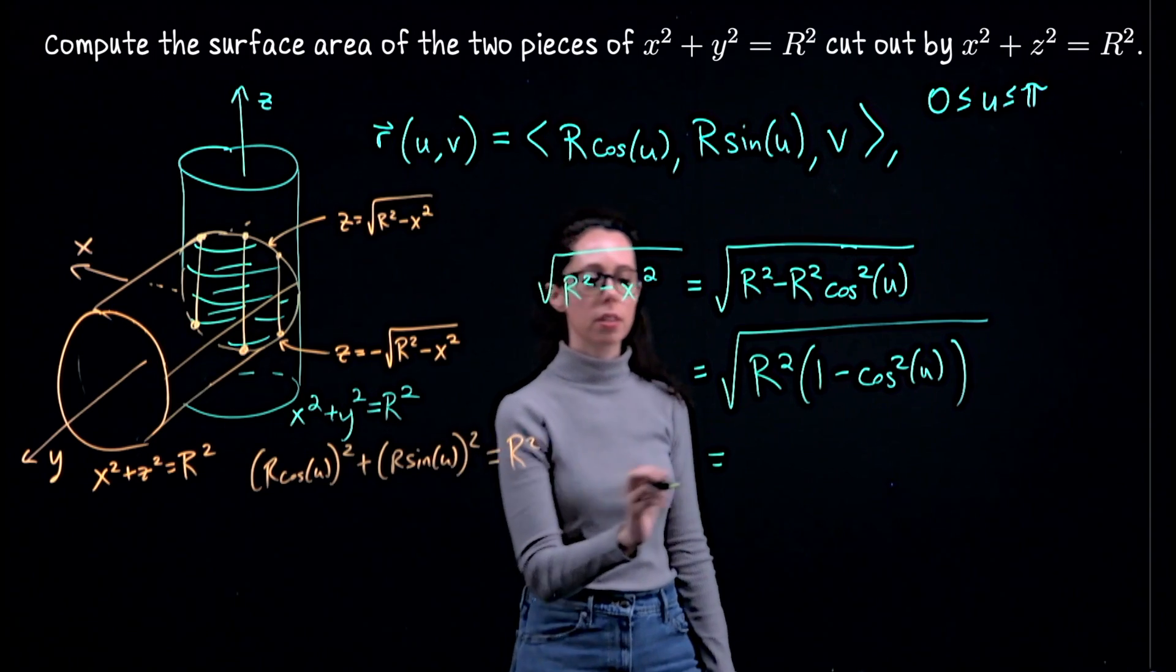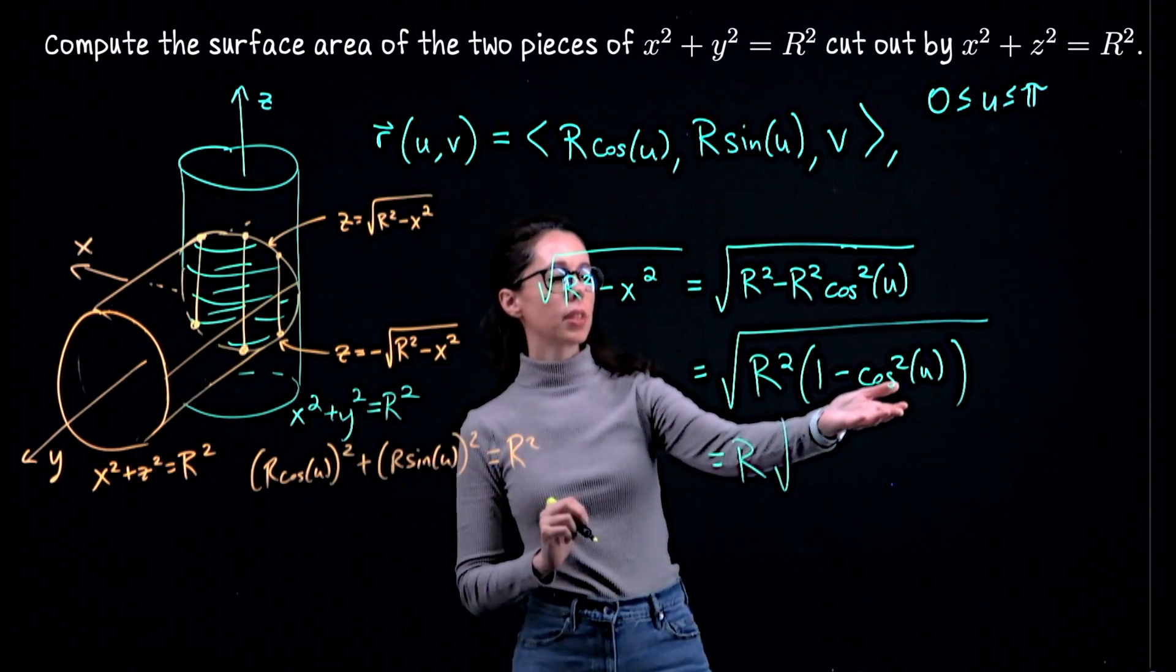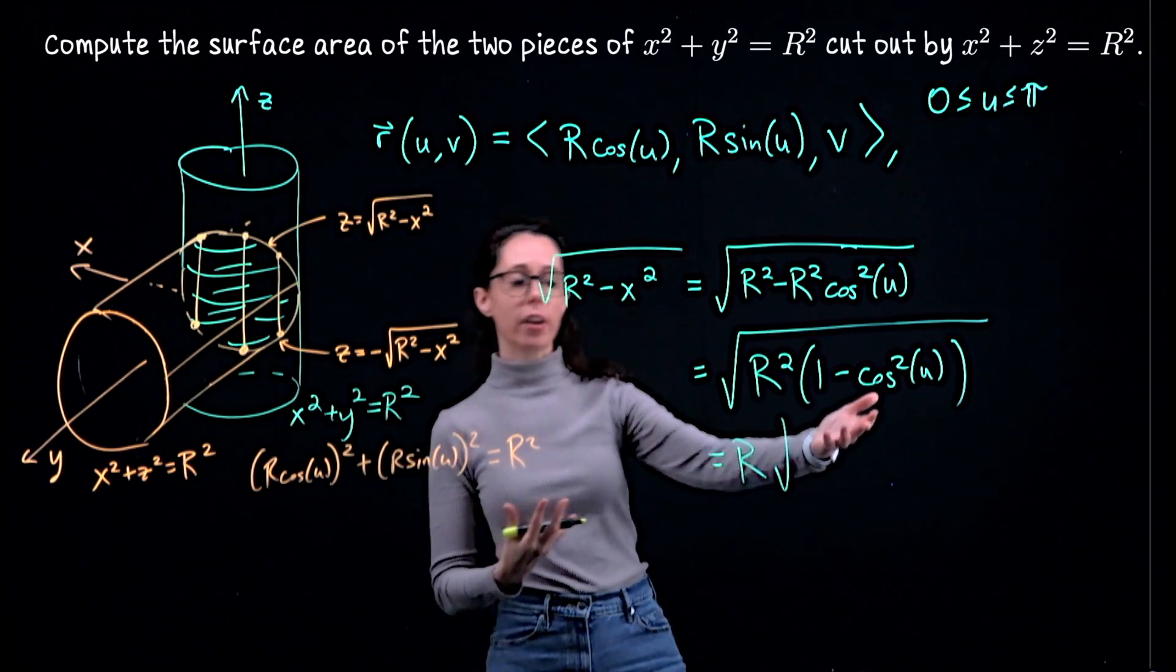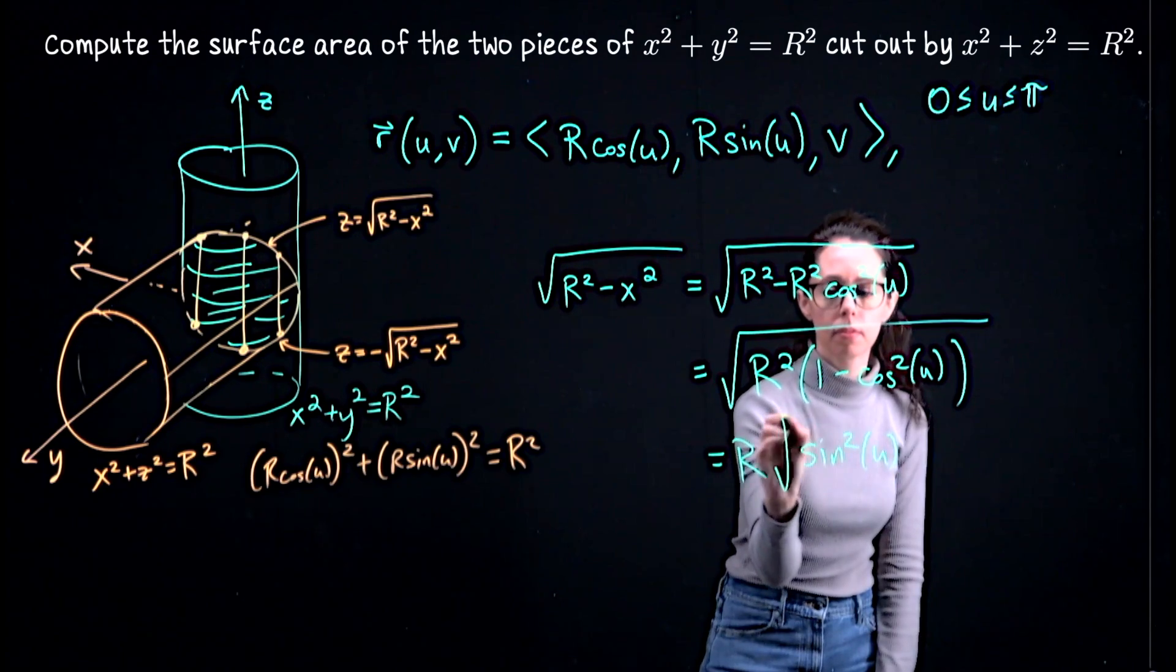This is a perfect square. Capital R is a positive number. It's the radius, so let me pull that out front. And then 1 minus cosine squared is sine squared from the Pythagorean identity.